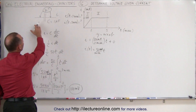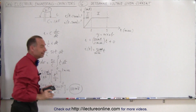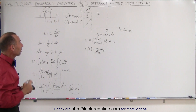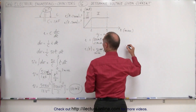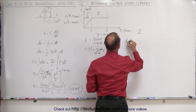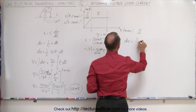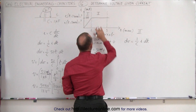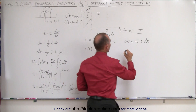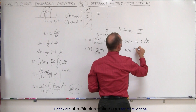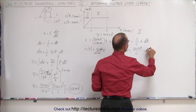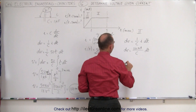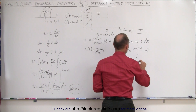Now we're going to find how much more voltage builds up when the current continues at a steady 100 milliamps. For region 2, dV is equal to 1 over C times I times dT. In this case I is a constant 100 milliamps, so dV equals 100 milliamps divided by the capacitance times dT. The voltage going from 2 milliseconds to 5 milliseconds equals the integral of dV.